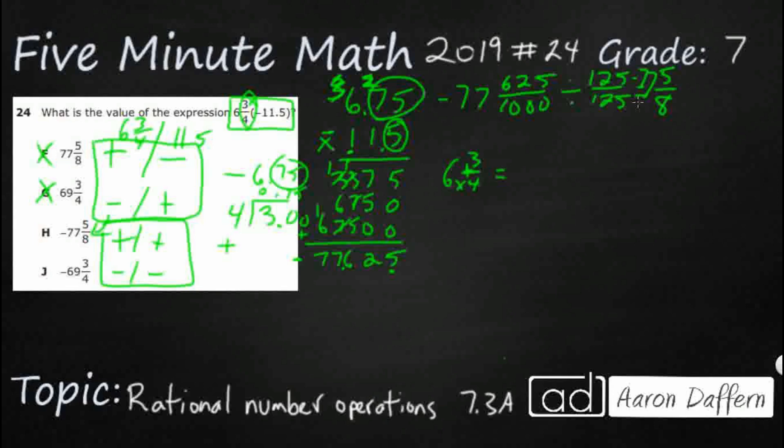So 6 times 4 is going to be 24. Add that numerator of 3 is going to be 27. So we multiply a whole number by the denominator, 24, and then add the numerator. Here, 27 fourths times we've got 11.5, which is going to be 11 and 5 tenths, which is really 11 and a half. And then we'll do that same thing. 11 times 2 is going to equal 22, add that one, 23 halves. Now, it is a negative, so let's go and put that in there. 23 halves.